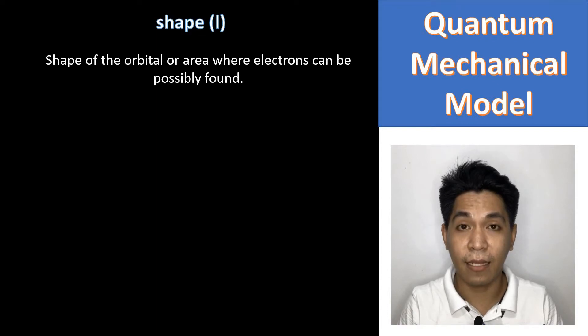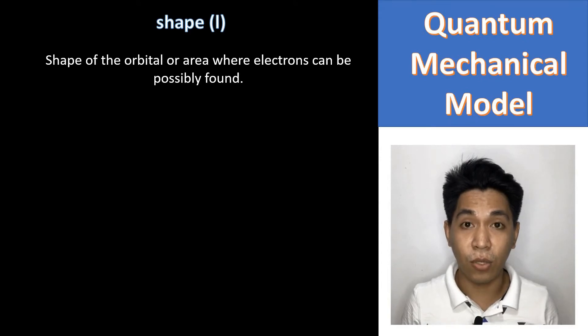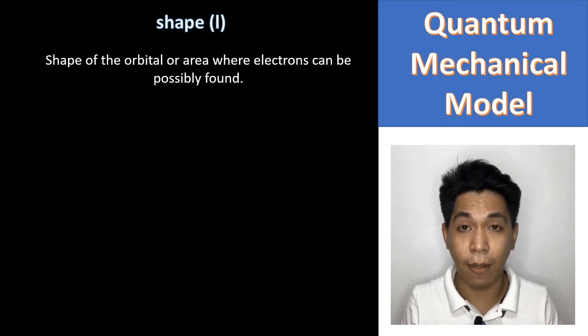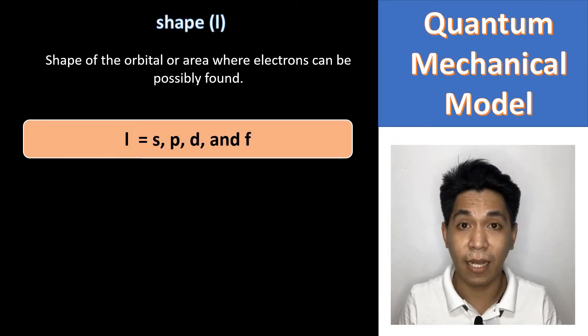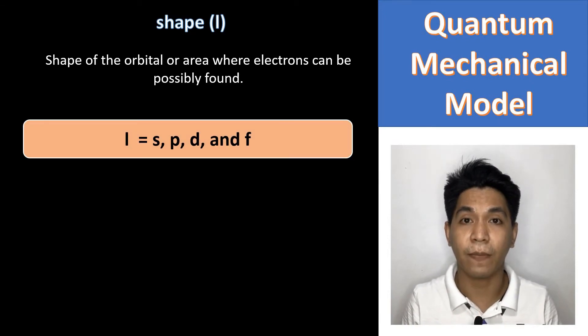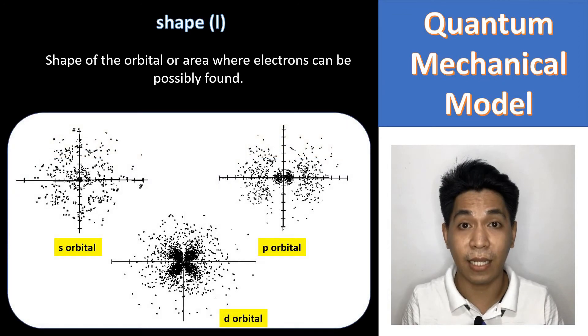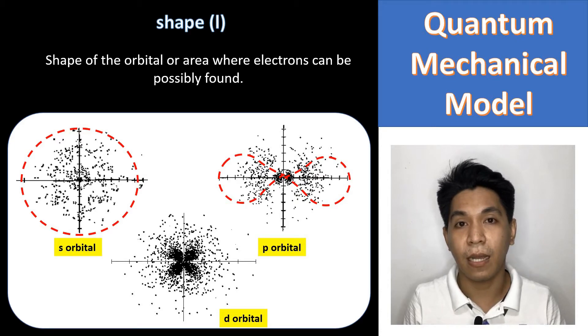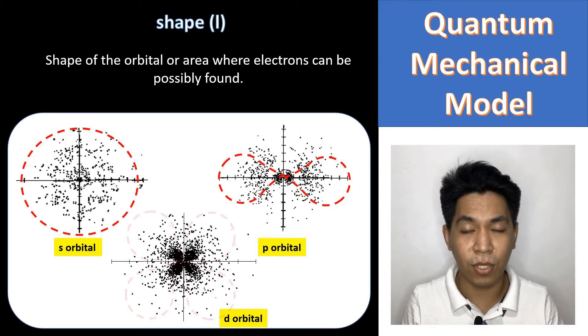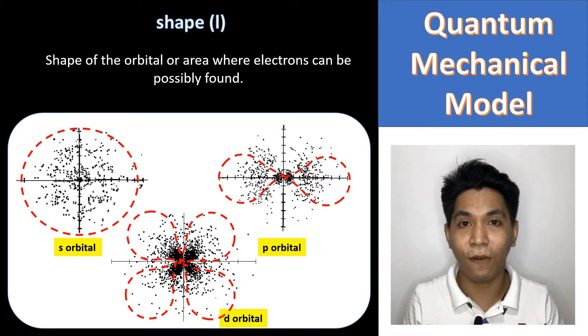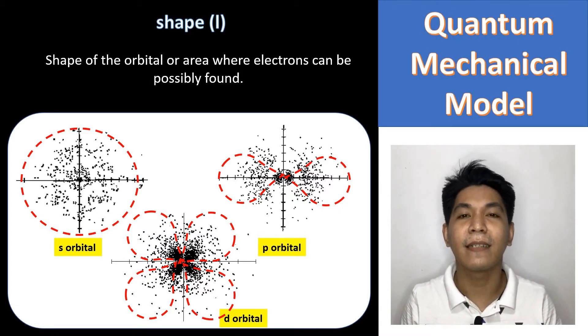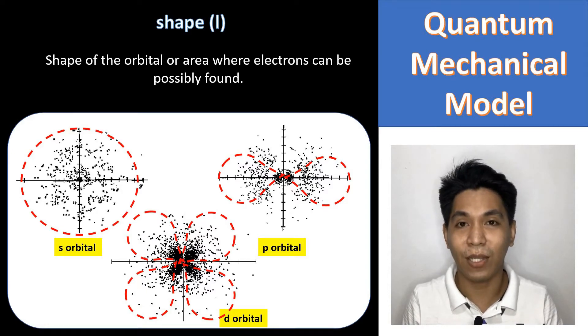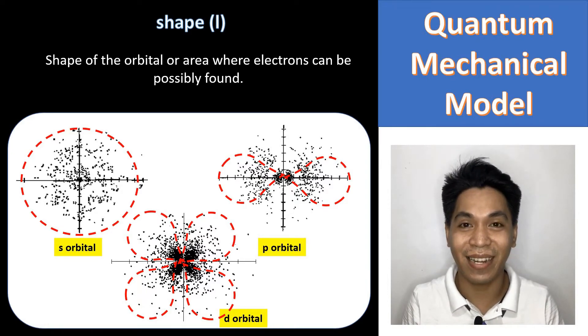The L tells us the shape of the orbital. We use the letters S, P, D, and F to represent the L or the shapes. The S orbital has a spherical shape. The P orbital has a dumbbell shape. The D orbital has most likely to have a clover shape, while the F orbital has a very complex shape. That's why I did not include it here in this slide.